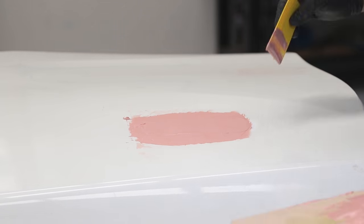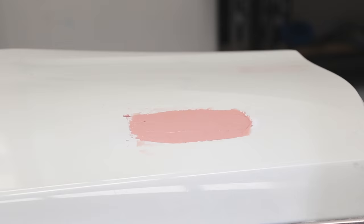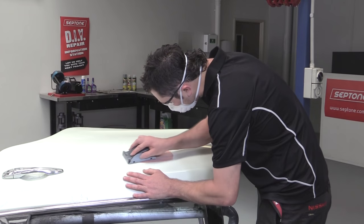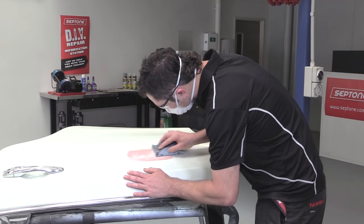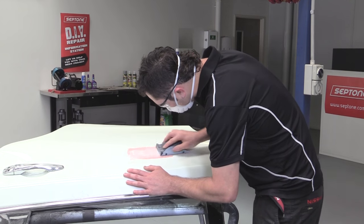Correctly mixed car filler is cured in 20 to 30 minutes and is then ready for sanding. Once the mixture is fully cured, sand with 80 grit paper until the body filler is level with the surrounding panel.